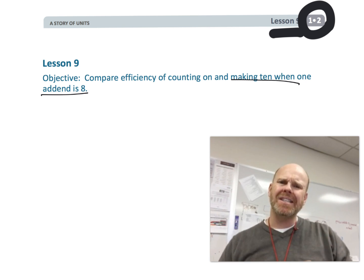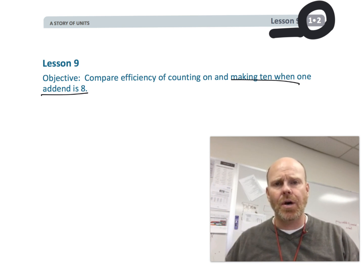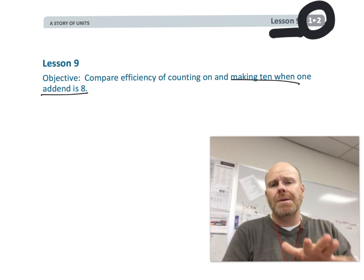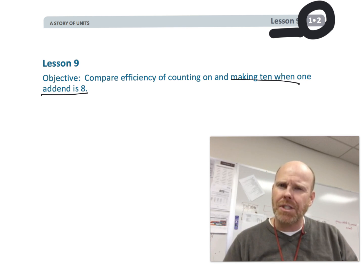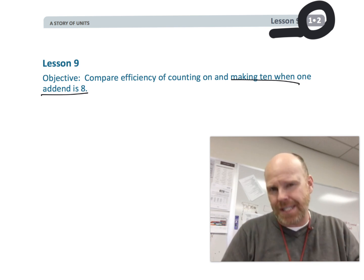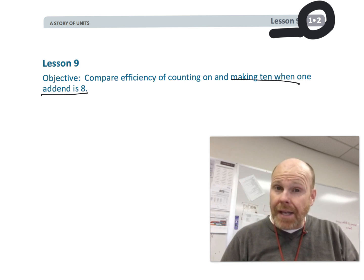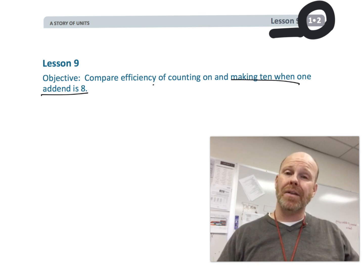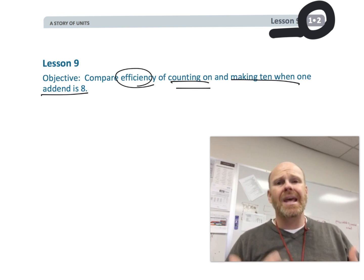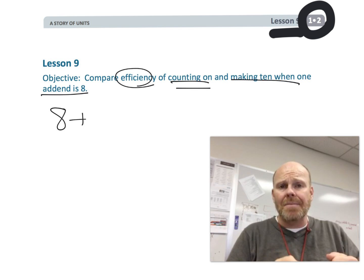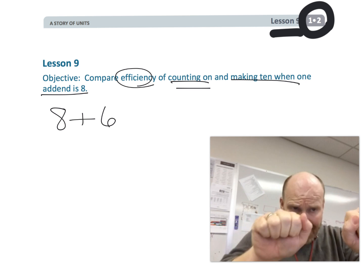But we're going to kind of repeat this cycle that we did several lessons ago, where not only are we going to be making 10 when one of the addends is 8, but we're also going to be appreciating its efficiency of using this strategy as opposed to the other strategy, which is the count-on method. For example, 8 plus 6, the count-on method would be saying, okay, 8,